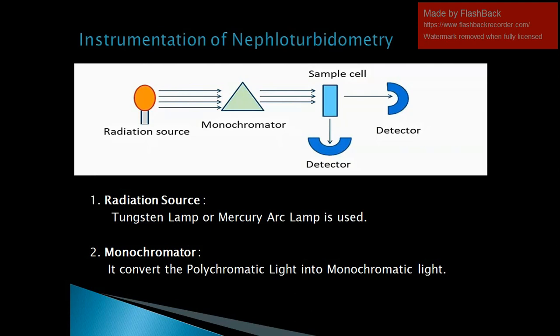Instrumentation of nephroturbitometry: in nephroturbitometry, two techniques are combined — turbidimetry and nephelometry. The radiation source, monochromator, and sample cell are placed in a straight line, while the detector is placed at both 90 degrees and 180 degrees to the radiation source. The radiation source emits radiation which passes through the monochromator, converting polychromatic light into monochromatic light. The monochromatic light passes through the sample cell, where some radiation scatters and some transmits; both are recorded by the detector.